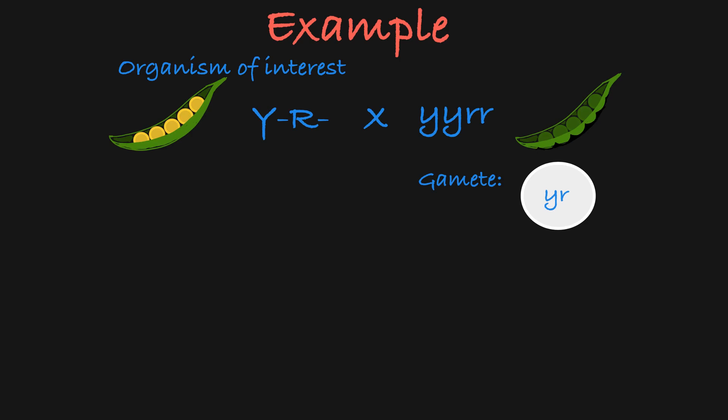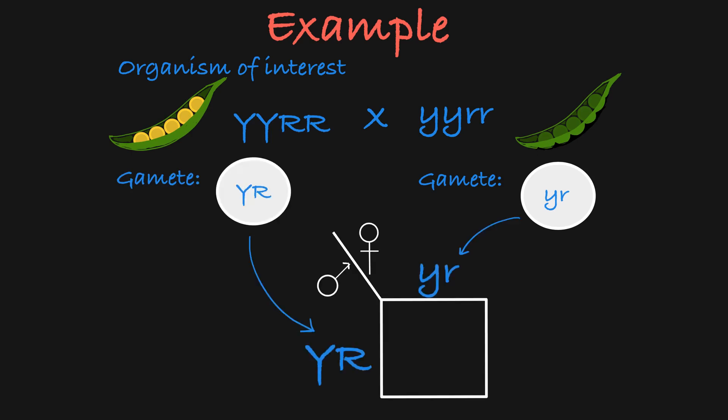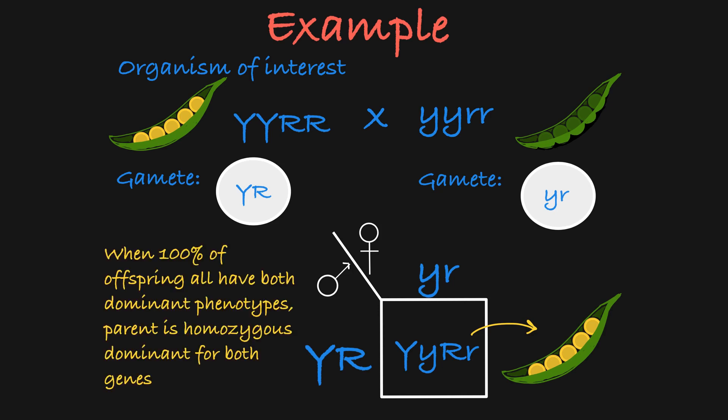So let's say our unknown parent is the homozygous dominant genotype for both genes. Then it can only create gametes with this genotype, and the offspring of the test cross will all be heterozygous and all look exactly like the parent of interest. When the offspring all have both dominant phenotypes, that means that the parent of interest is only passing on dominant alleles and is therefore homozygous dominant for both genes.